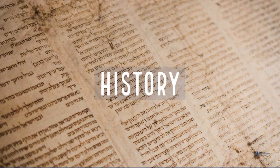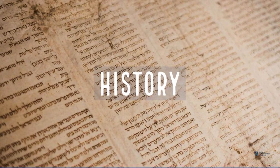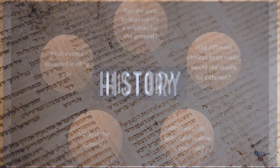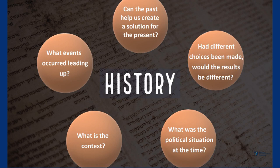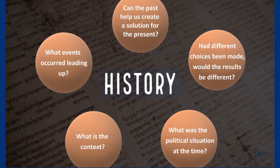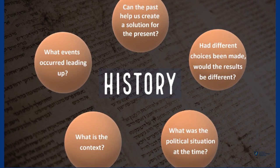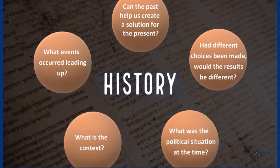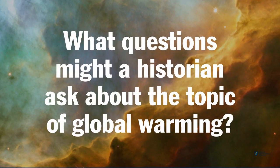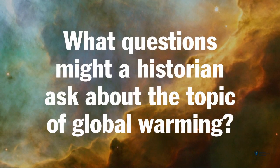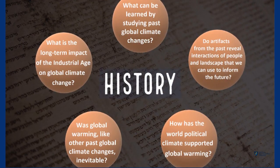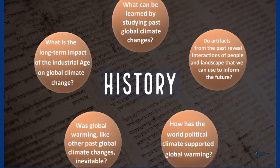The next lens is history. Historians study past events to solve problems happening now, or predict events in the future. The historical lens concerns questions of context and cause and effect, such as what was the political situation at the time, or what would the results have been if different choices had been made? Our questions about global warming through the history lens are still about context and cause and effect.